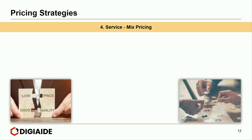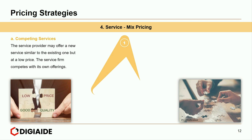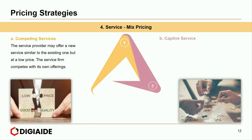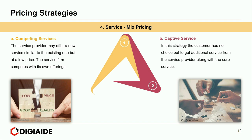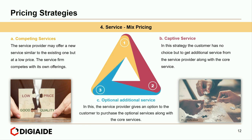Moving on to the fourth pricing strategy, service mix pricing, which entails three subtypes. First, competing services — the service provider may offer a new service similar to the existing one at a lower price, competing with its own offerings. For example, an airline offering a direct flight on the same route at a lesser price. Next, captive service — the customer has no choice but to get additional service from the provider along with the core service; software firms offering annual maintenance contracts provide free software upgrades. Finally, optional additional services — the service provider gives the customer an option to purchase optional services. For example, holiday resorts keep room tariffs low but charge more on optional services like restaurant and spa.